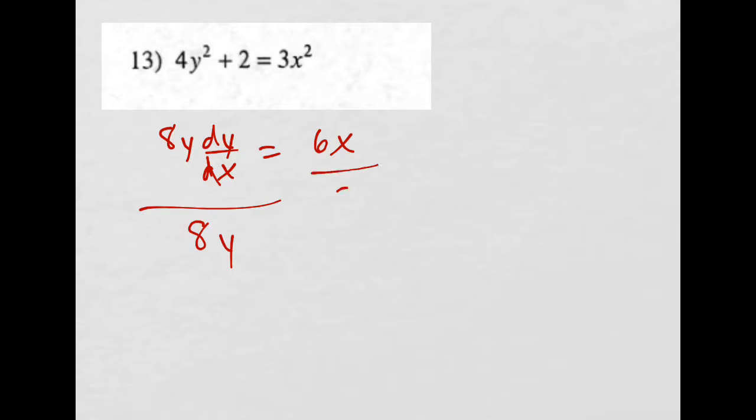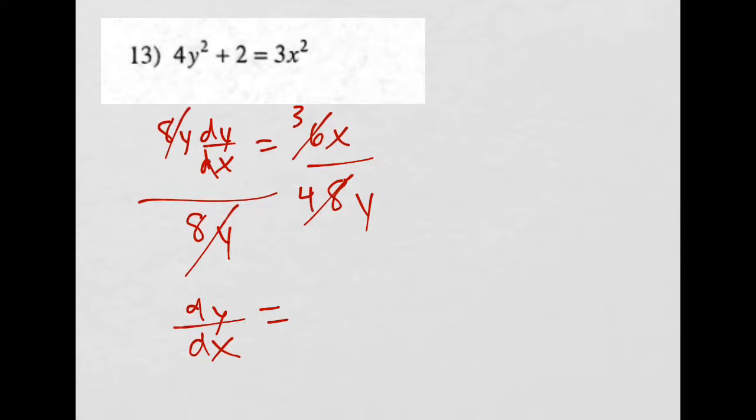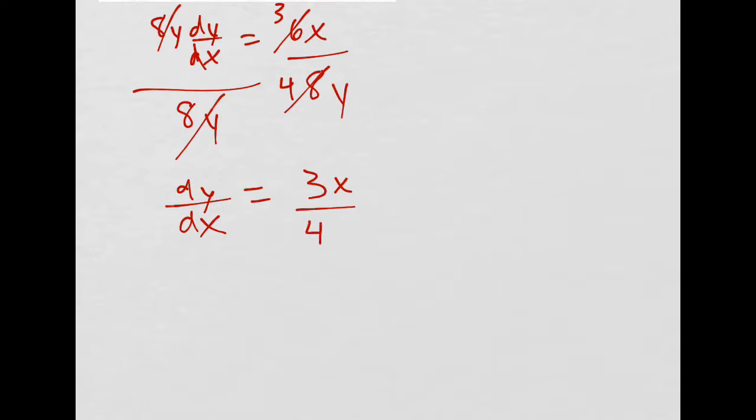Divide both sides by 8y, and then we have dy/dx equals, divide by 2, that would be 3 fourths, so 3x over 4y.